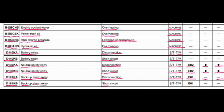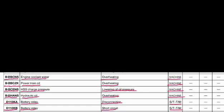Code D161KB: the part is the backup alarm relay and the problem is short circuit. Controller is the steering and transmission controller. Action code E01. No lamp blinking and no beep is coming.